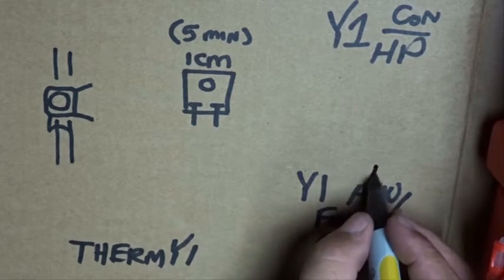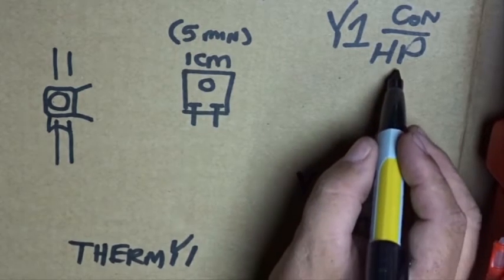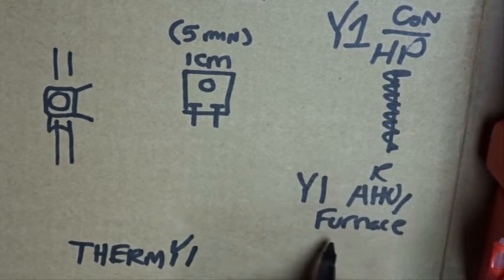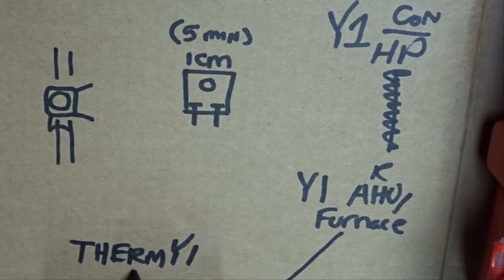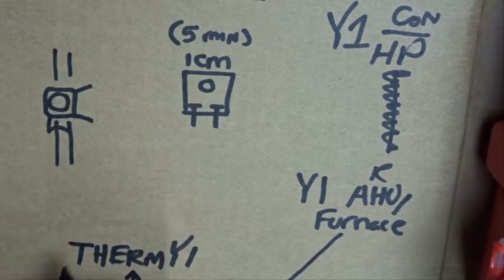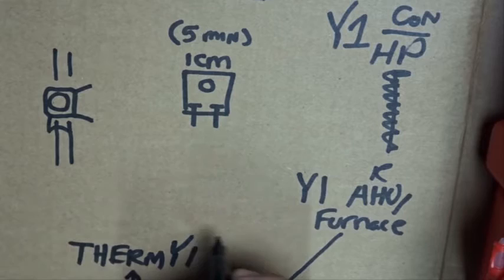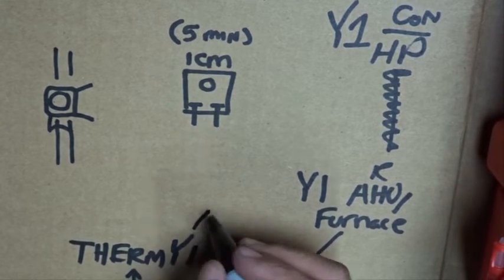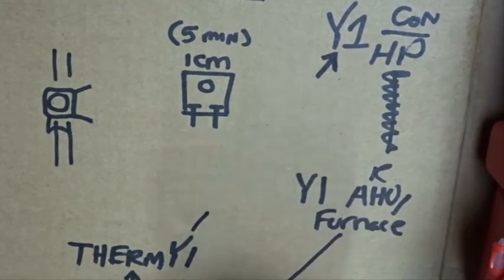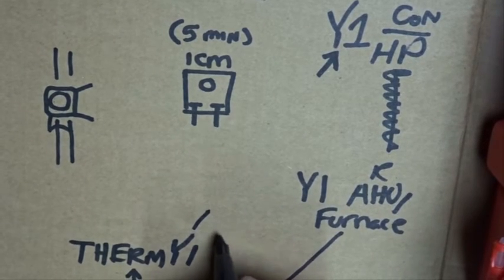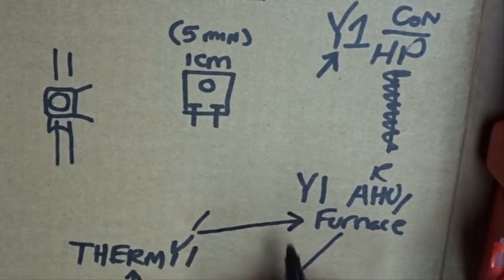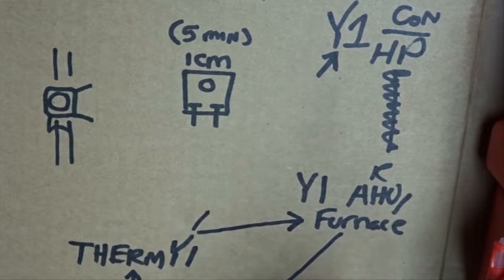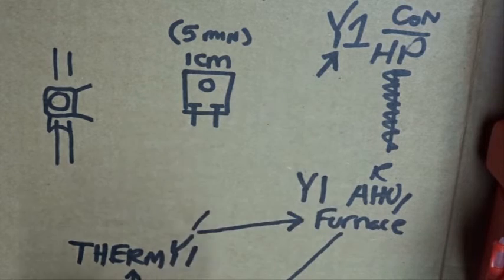You just want to separate that signal before it gets to the condenser. So your air handler, you have your R and it's sent to the thermostat to power the thermostat. And then when you hit the cooling and the cooling comes on, it's going to send a Y1 signal to your condenser, typically. And sometimes it's going to send a Y1 signal to the furnace as well. But we're not concerned with that. That's going to tell the ECM blower to run at a certain speed if you have that. PSC that's irrelevant.